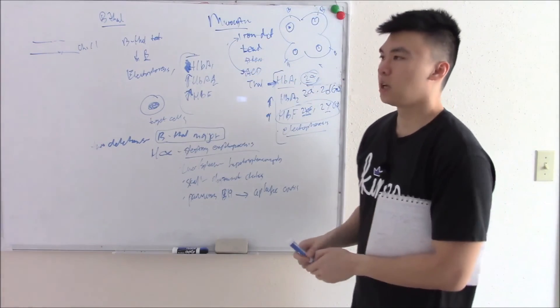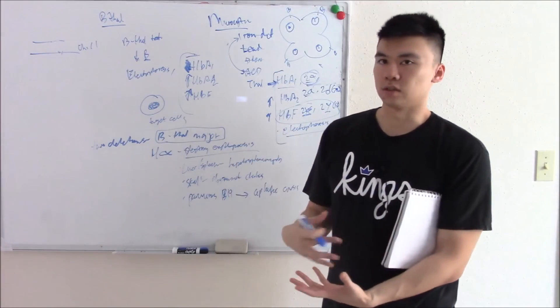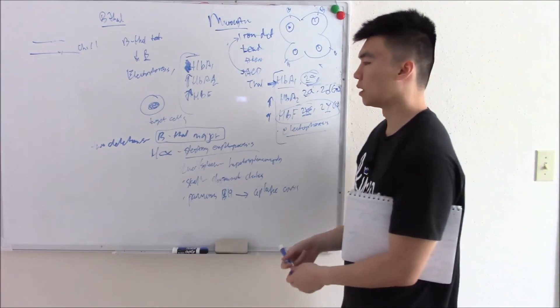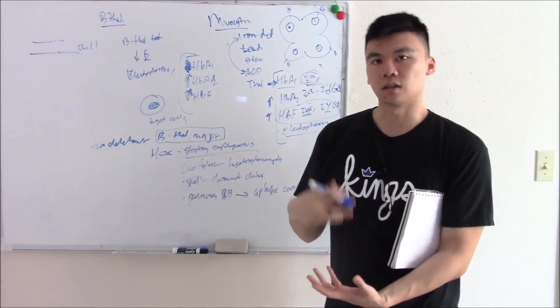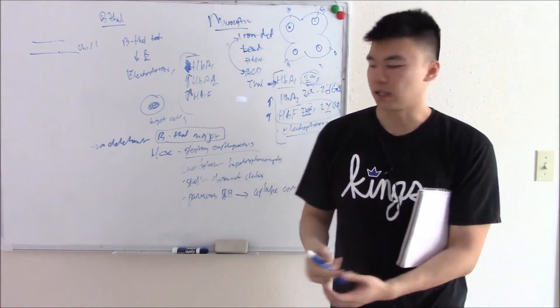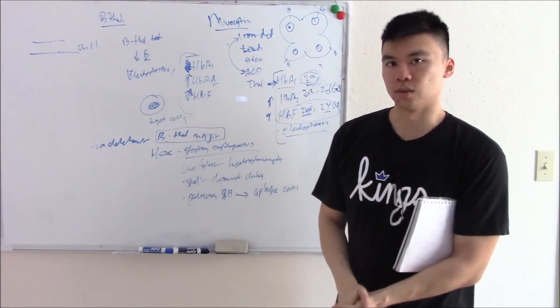Treatment: the only cure is bone marrow transplant. But if you don't want to do that, then you can do chronic blood transfusion to try and give them blood. The problem is they can face iron overload. So you might have to do iron chelators. And then lastly, you can do splenectomy if the spleen is too big or it's causing too much hemolytic anemia.